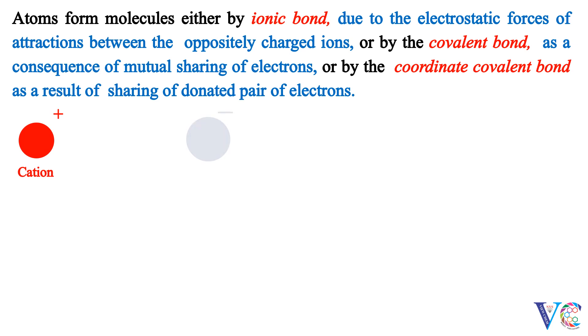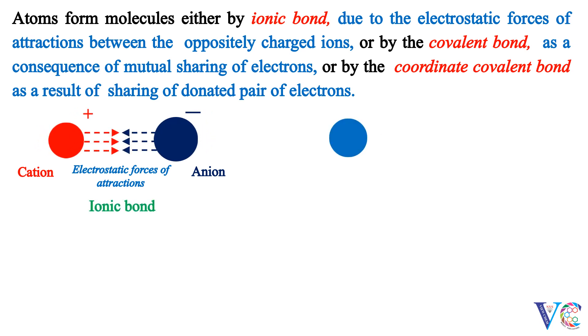Cation and anion. Electrostatic forces of attractions between the oppositely charged ions lead to formation of ionic bond. Atom A and Atom B undergo mutual sharing of electrons, resulting in formation of covalent bond.